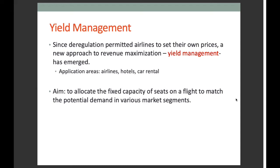However, selling all seats at a discount would preclude the possibility of selling some at full price. Therefore, yield management attempts to allocate the fixed capacity of seats on a flight to match the potential demand in various market segments — such as coach, tourist, or super saver — in the most profitable manner.